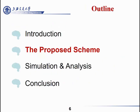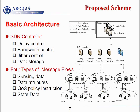For our work, we proposed a scheme that uses software-defined QoS provision and makes it dynamic. As you can see in this picture, it has four layers: application, SDN control, fog, and WSN. It also has four types of message flows: sensing data, data attributes, QoS policy instructions, and state data.